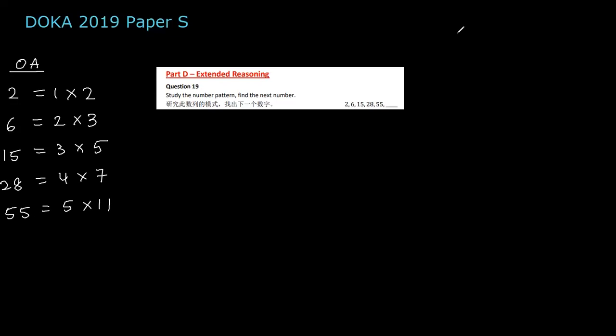Once we have written them as a multiplication, it's quite clear that the sequence here holds the number 1, 2, 3, 4, 5. Or rather, if I want to find the nth term of the sequence,